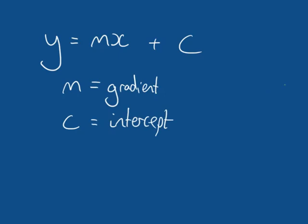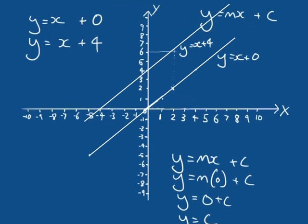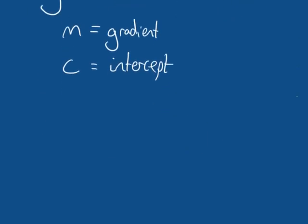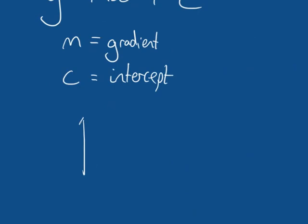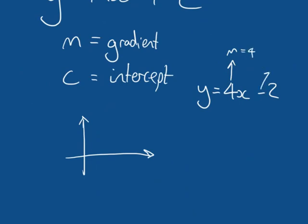When you now see some line equation — say Y equals 4X minus 2 — you can quickly identify M equals 4 as the gradient and C equals minus 2 as the intercept. It's very easy to draw this line: C equals minus 2 means we cut the Y axis at minus 2, and gradient equals 4 means if I move one unit in X, I move up four units in Y. We have two points that define the line.